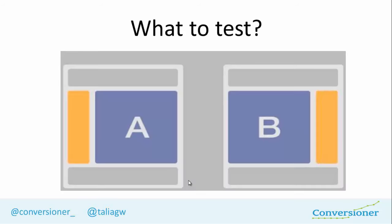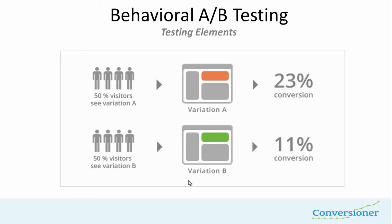When you do A/B testing, the most common thing to do is take a landing page, duplicate it, and just change one element. For example, you take a call to action button and have an orange one and a green one, and you see the orange one won by 23%. But the biggest issue with these tests is that you don't really know why they work — why did the orange button win and what is the next step? The most important thing in conversion optimization is being able to scale and learn, take the test results, and continuously grow and optimize.